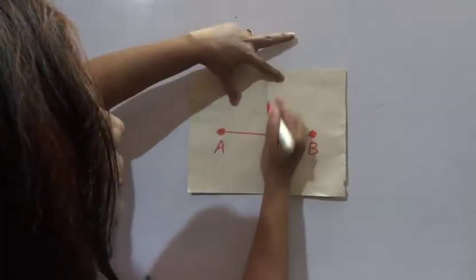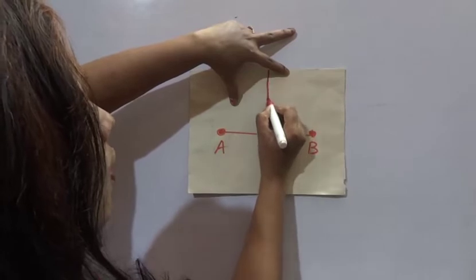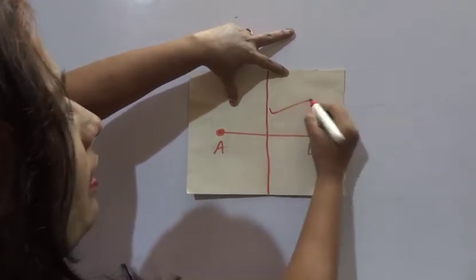Through this crease you can draw a line. This is the bisector of this line AB.